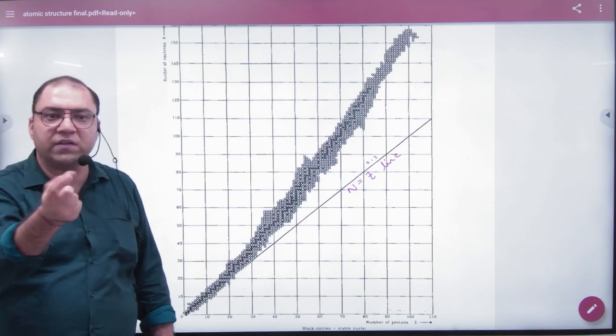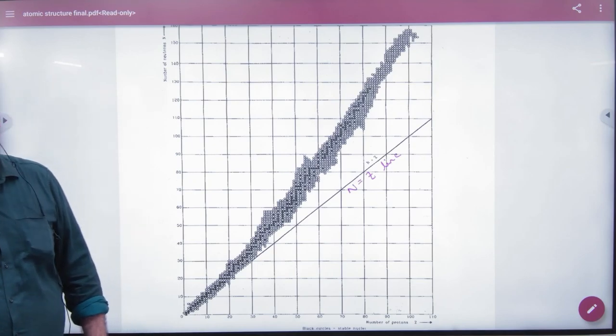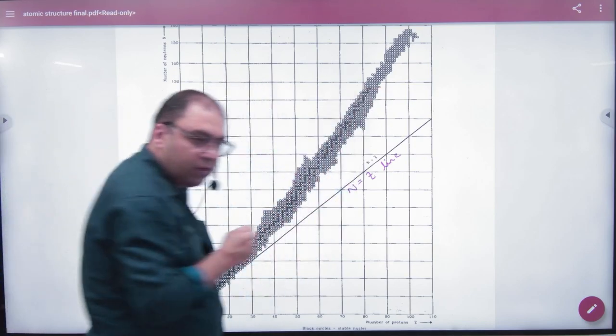...and ask me, sir, is it stable or unstable? I will check N and Z plotting. If the plot is in the black circle region, then I will say it is stable.